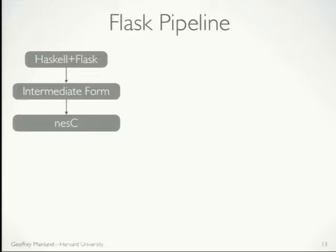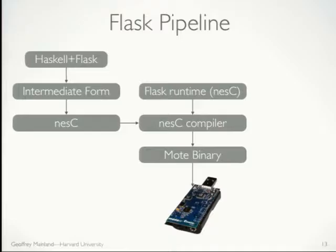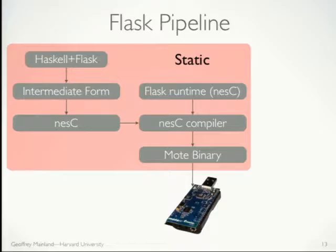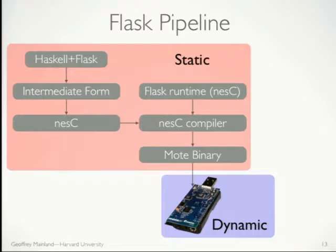The pipeline is: we take Haskell and Flask code, generate an intermediate form for the RED code, which also describes how the combinators build up the streaming data graph. We convert that down to Nessie, translate it. We have a runtime also written in Nessie. Taking these together, we slam them through the Nessie compiler to generate a binary that we push onto devices. This is all the static stuff — compile time — but we're running a Haskell program at compile time to generate code that we then compile and stick on the node.